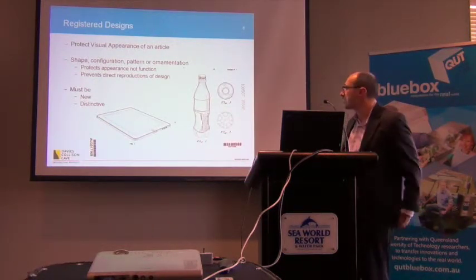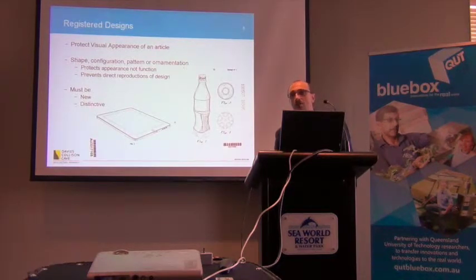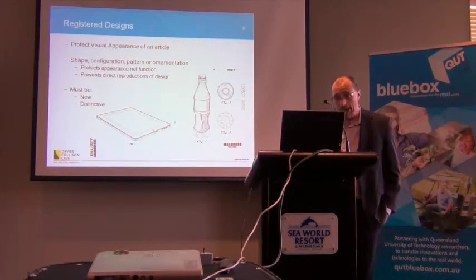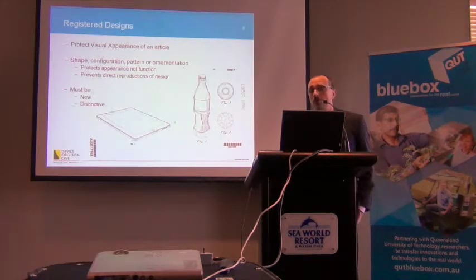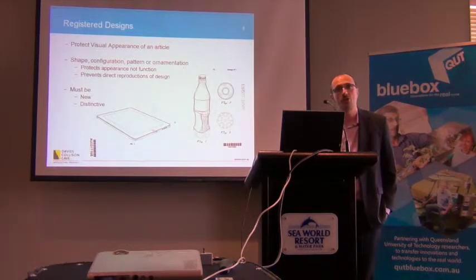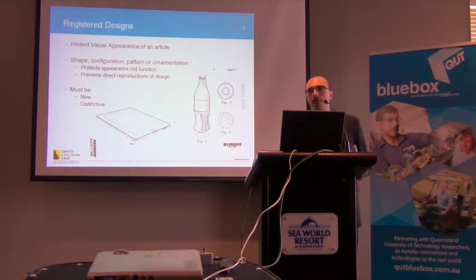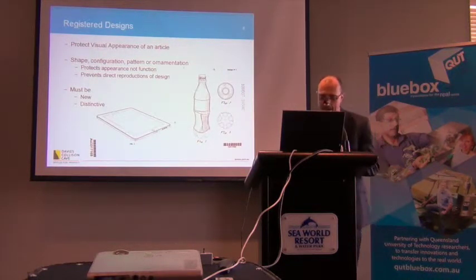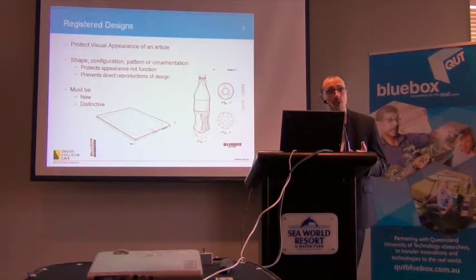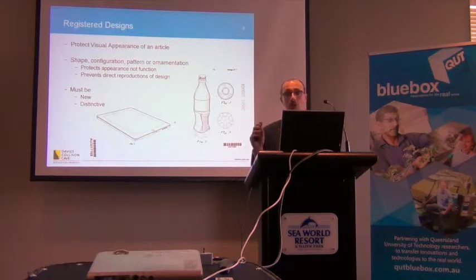Registered designs protect the visual appearance of things — the iPad, the Coca-Cola bottle. That highlights an interesting point: you can get multiple types of protection on the same idea or article. Registered designs protect the visual appearance — shape, configuration, pattern or ornamentation — but they don't protect the functionality. So areas where this is used include sunglass designs, watches, mobile phone cases, tablets. With an Apple tablet, you've got trademarks, registered design on the appearance, but also functionality protection on the interface and electronics — multiple different types of intellectual property on the same item.